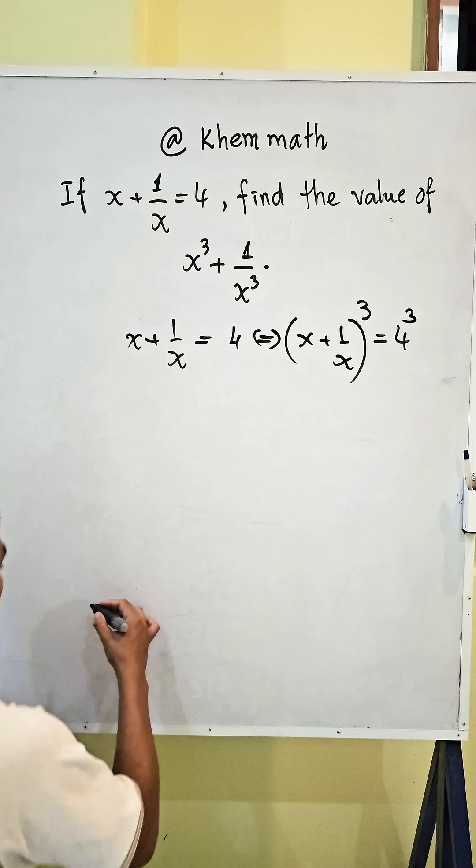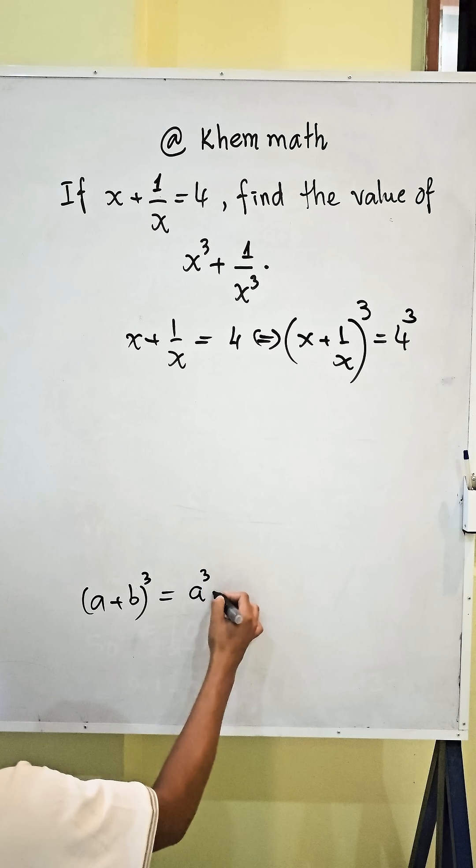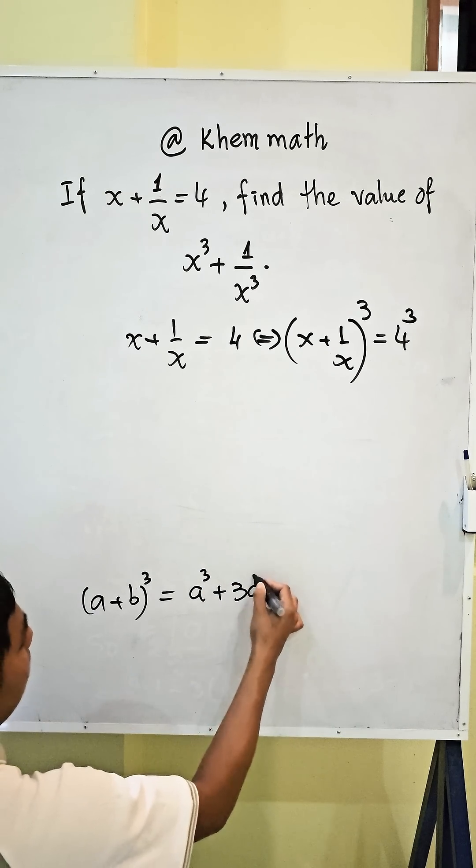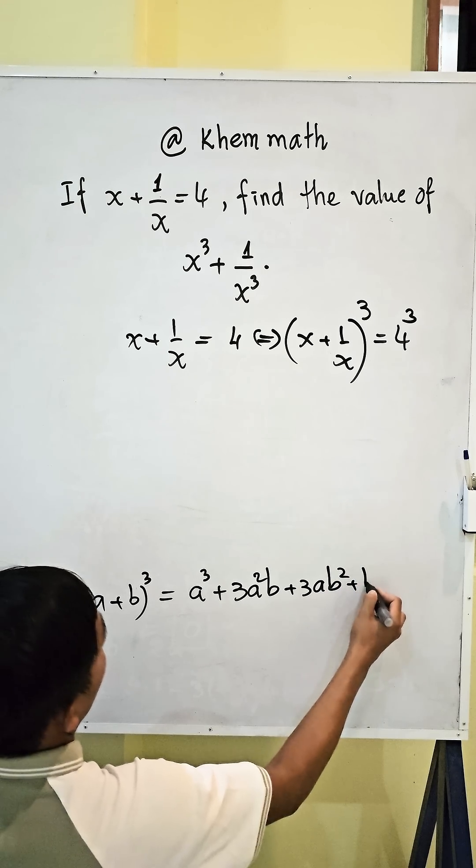We do the formula. If a plus b on power 3 equals a power 3 plus 3 a squared b plus 3 a b squared plus b power 3.